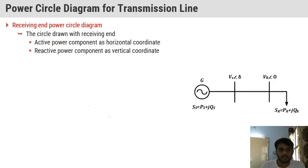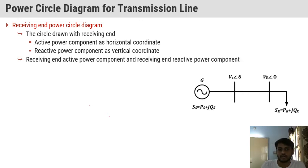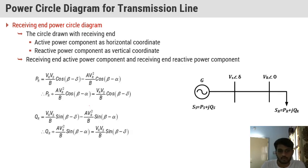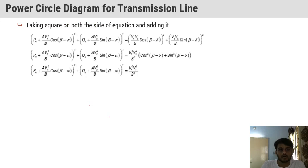The receiving end circle diagram contains a circle drawn with receiving end parameters, with the active power component as the horizontal coordinate and the reactive power component as the vertical coordinate. The receiving end active power component and receiving end reactive power component form the two components of power PR. We already have the equations for PR and QR. Now, taking the square on both sides of each equation and adding them — let's look at the formulas to understand why this squaring and adding is done.